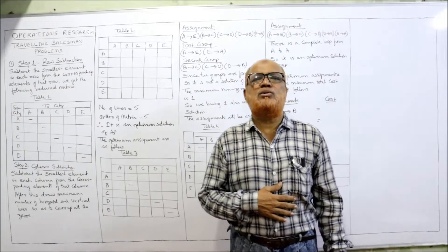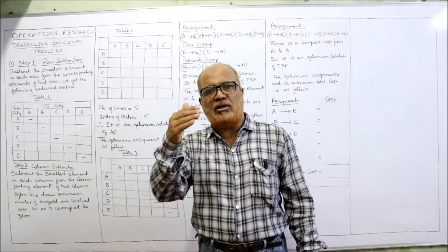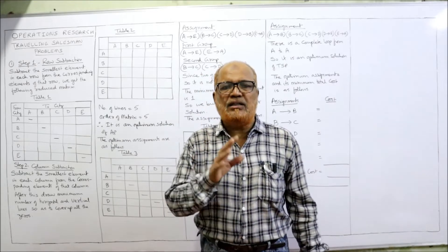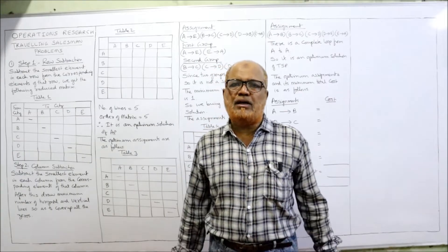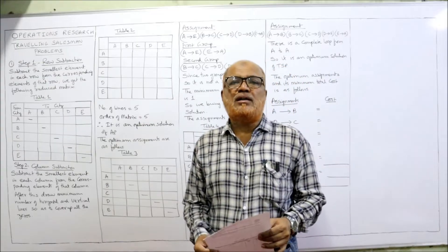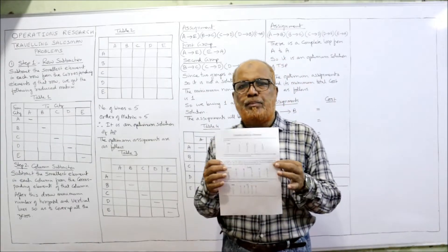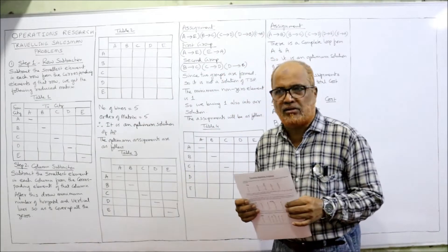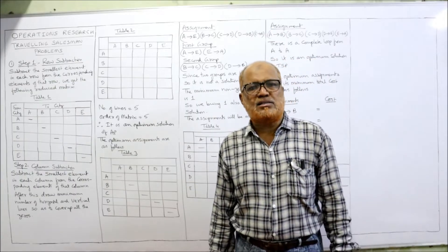First we begin with the same procedure as in the Assignment Problem: row subtraction, column subtraction, drawing the minimum number of lines to cover all zeros, then making the assignment. Up to here the procedure is the same for AP and TSP. Before starting the second problem, I expect my viewers to have a printout of the problems I have given in the link in my description. Take a screenshot of the points I have written on the board and then I'll explain.